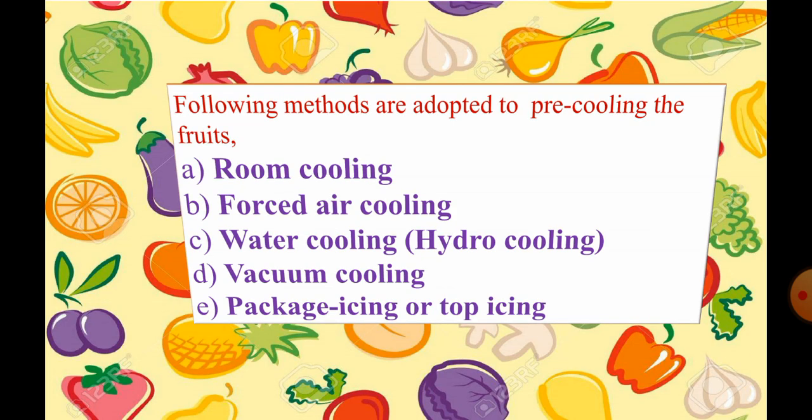The five different methods of pre-cooling are: room cooling, forced air cooling, water or hydro cooling, vacuum cooling, and package icing or top icing.